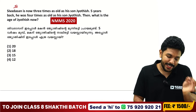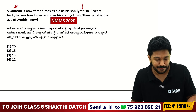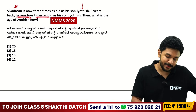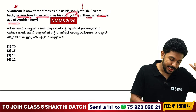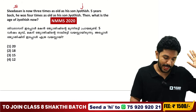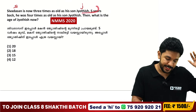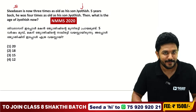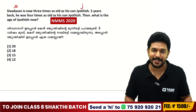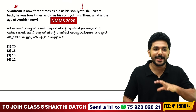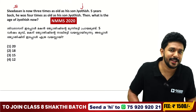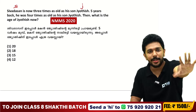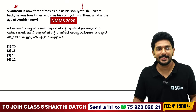Next question: Shivadasan is now three times as old as his son Jodish. Five years back, he was four times as old as his son Jodish. What is the present age of Jodish? Try to solve this. This is the same type as the previous age problems — you will be able to solve it the same way.